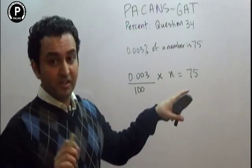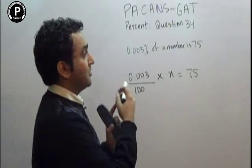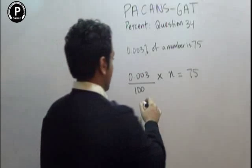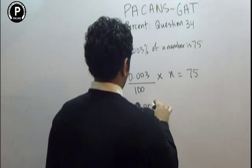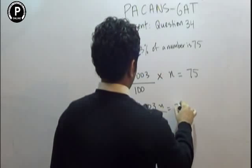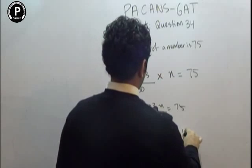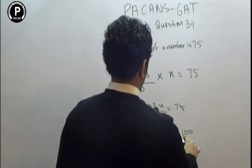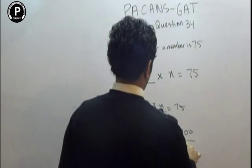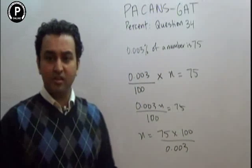So that would be 0.003x over 100 is equal to 75, which is going to be x is equal to 75 times 100 over 0.003. So if we will solve this, we will have another. Thank you.